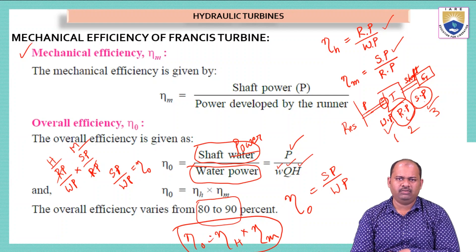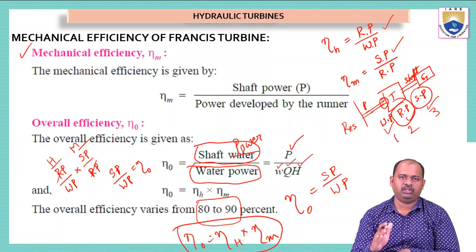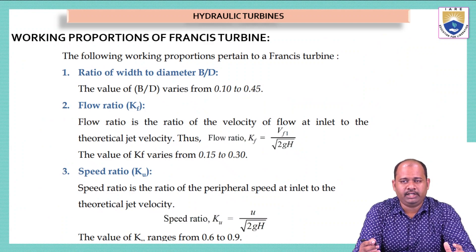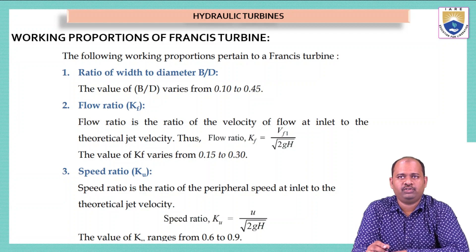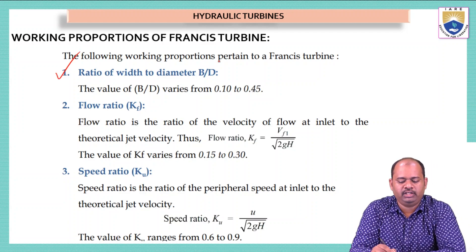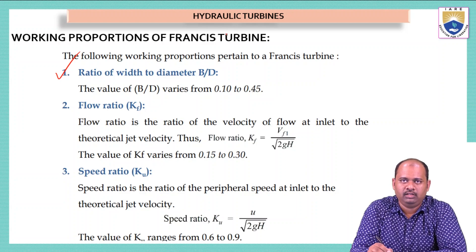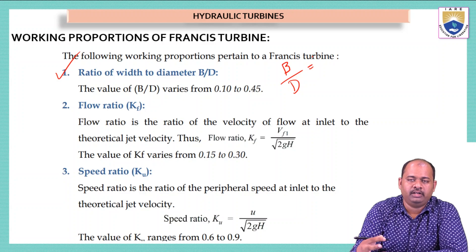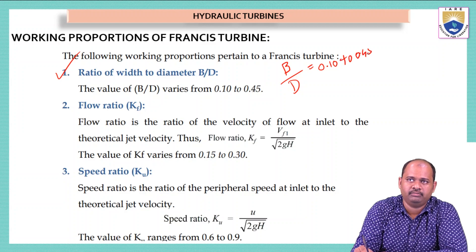This relation is not only valid for Francis turbine but for any hydraulic turbine: overall efficiency is the product of mechanical and hydraulic efficiencies. Now we will see some formulas related to the Francis turbine — the working proportions. First is the ratio of width to diameter (B/D), which stays between 0.10 to 0.45. This ratio is directly related to the diameter of the runner and the width of the spiral case or vane.